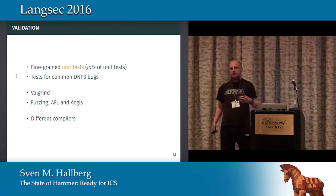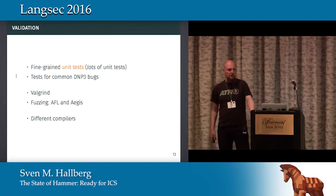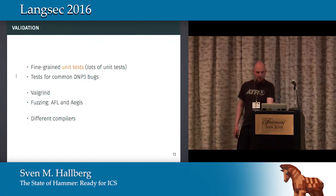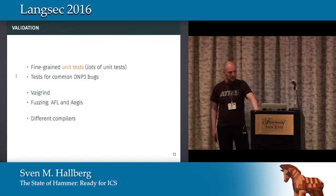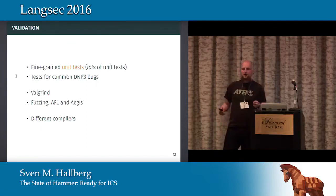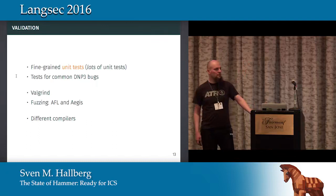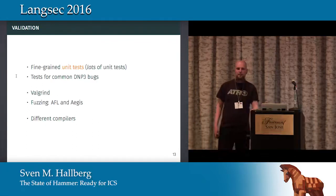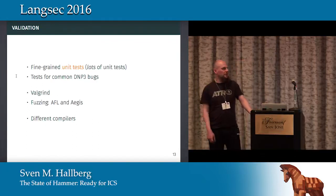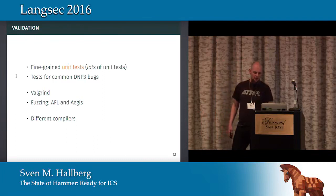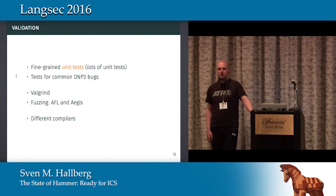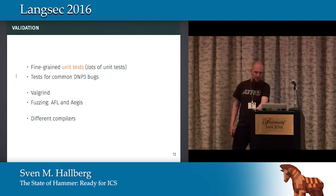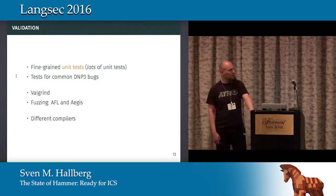We also had some particular tests for common bugs in DNP3 that basically always happen. Then we did the typical Valgrind and also fuzzing - first with AFL, American Fuzzy Lop, which is coverage-based, and also Aegis, the fuzzer by Adam Crane that he famously used to crash all kinds of DNP3 systems. Lastly, we ran through different compilers as a stand-in for static analysis.